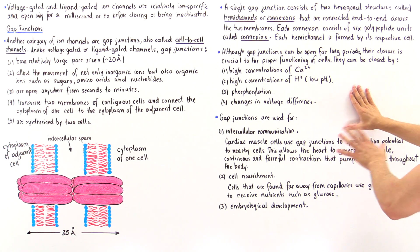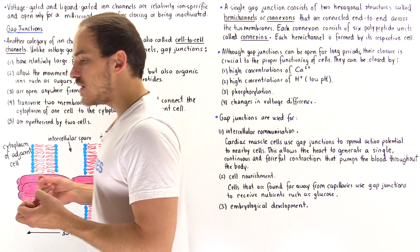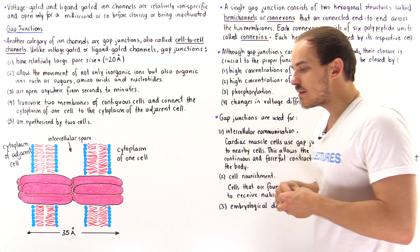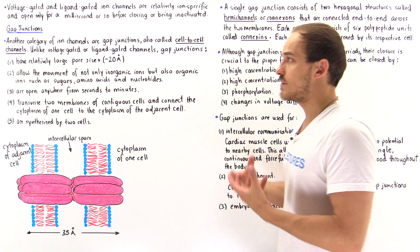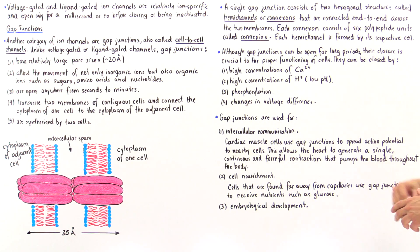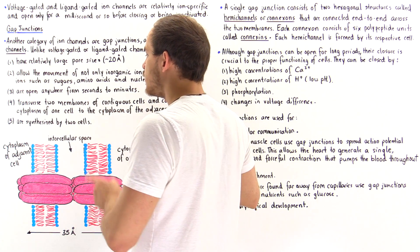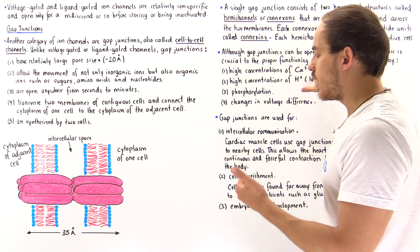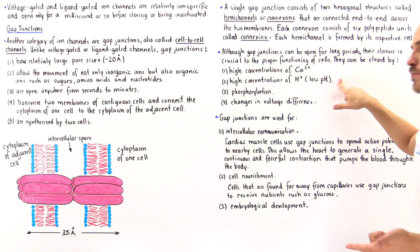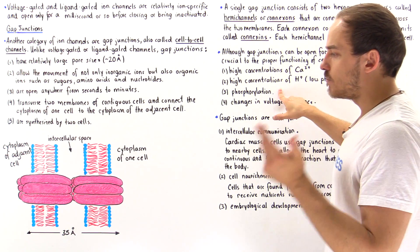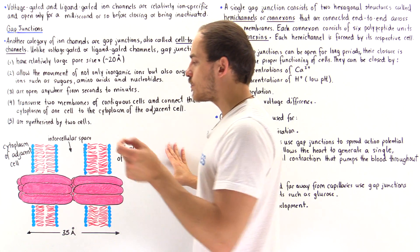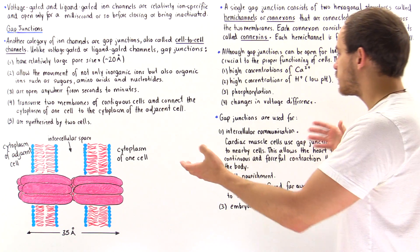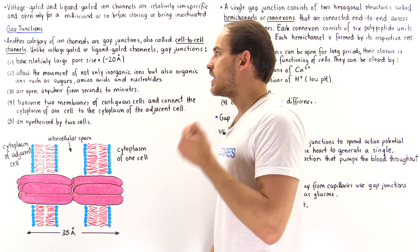Before examining the functionality of gap junctions, let's discuss how they are regulated by our cells. Just like voltage-gated and ligand-gated channels must be regulated, gap junctions too must be regulated. There are four methods by which we can close off gap junctions: increasing the concentration of calcium ions; increasing the concentration of H⁺ ions, which is the same as lowering the pH; certain hormones that induce phosphorylation of the gap junctions; and in some cases, changing the voltage difference can also close them.